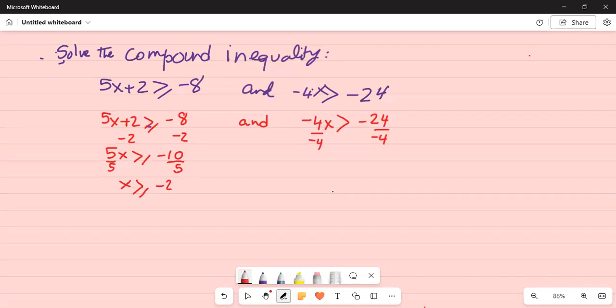But one key point to note: when you divide or multiply by a negative, the inequality flips direction. So this becomes x is less than minus 24 divided by minus 4, which equals 6.